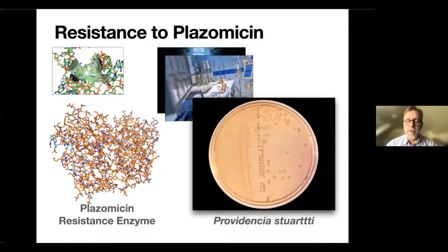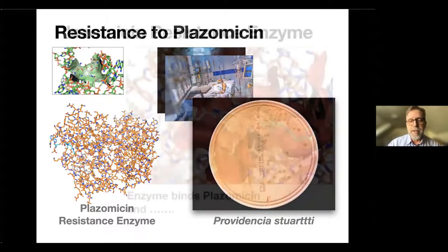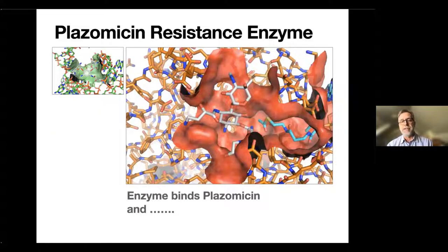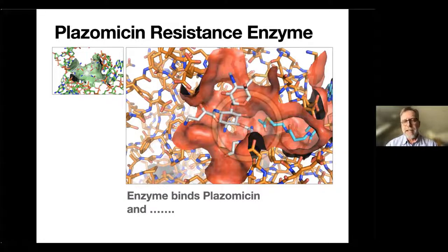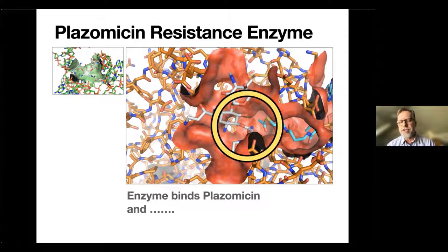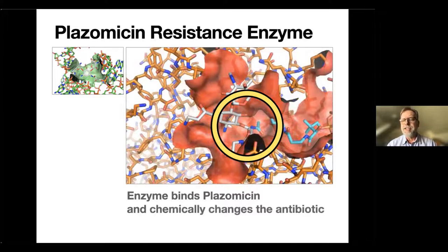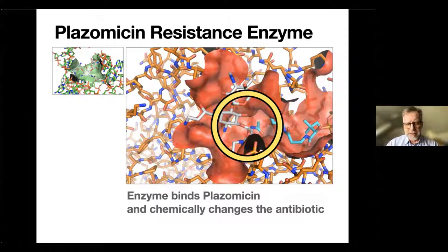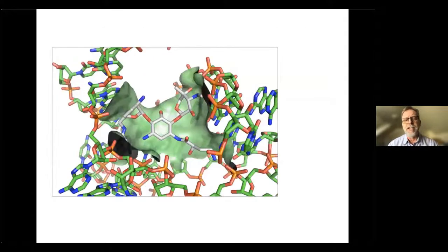We also determined the structure in atomic detail of this enzyme and how plazomicin binds to there. Here you can see plazomicin bound to the enzyme, and enzymes don't just bind things, but they chemically modify them. It's a bit hard to see in this view, because it all happens on the inside of the enzyme, but if you focus on the yellow circle, here is a small change that actually happens. You might have missed that. Don't worry about it, because let's see what the impact of that is.